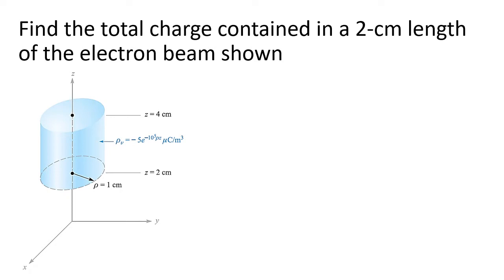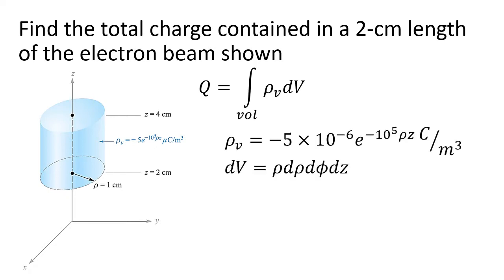From the definition of volume charge density we can derive the formula for the total charge in enclosing a volume, which is equal to the integral of the volume charge density times the differential volume. From the given value of volume charge density, we have from the figure -5 × 10⁻⁶ e⁻¹⁰⁵ρz, and that is microcoulomb per cubic meter.